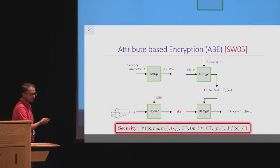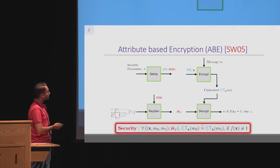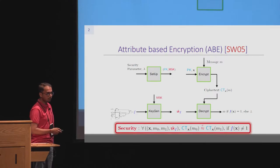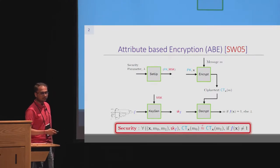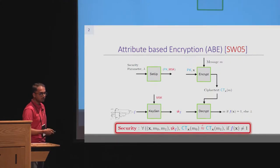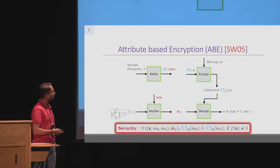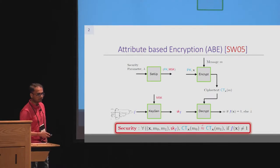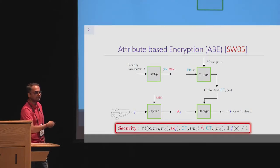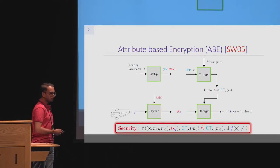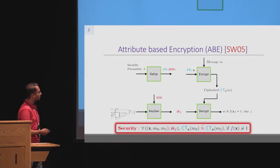The setup takes the security parameter and outputs a public key and a master secret key. Encryption takes the public key, an attribute X, and a message M to output the cipher text encoding the message with respect to attribute X. The key generation algorithm takes the master secret key and a circuit F to output the secret key for that functionality. The secret key, when used in the decryption box, outputs the hidden payload M if and only if the attribute satisfies the function.